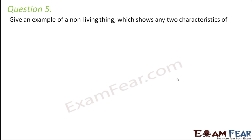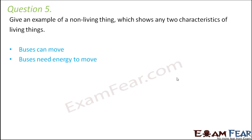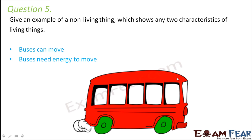Question number five: give an example of a non-living thing which shows any two characteristics of living things. Buses can move, so they show movement. Also, buses need energy to move — you give petrol or diesel as a kind of fuel which provides energy to the bus so that it can move from one place to another.